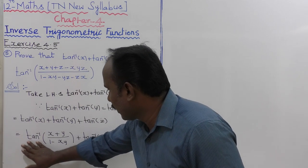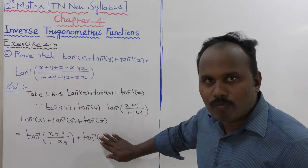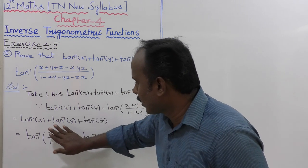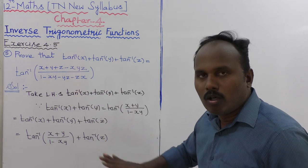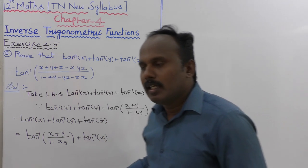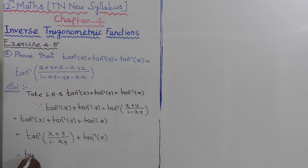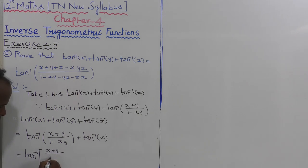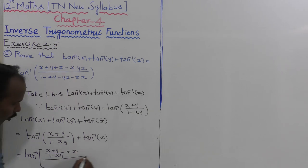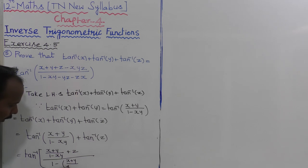So now applying the addition formula again: tan inverse of x plus y divided by 1 minus xy, plus z, the whole divided by 1 minus x plus y, divided by 1 minus xy, into z.